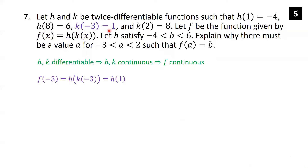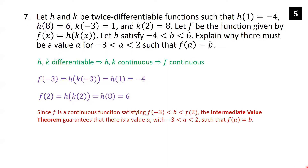Since f is the composition of two continuous functions, f is also continuous. Now f(−3) = h(k(−3)) = h(1) = −4, and f(2) = h(k(2)) = h(8) = 6. Since f is continuous and b is between f(−3) = −4 and f(2) = 6, the Intermediate Value Theorem guarantees there is a value a with −3 < a < 2 such that f(a) = b.